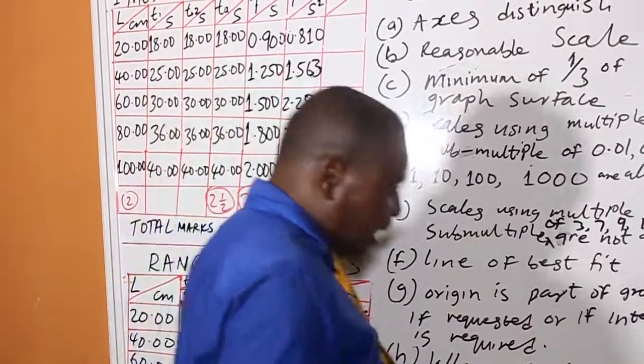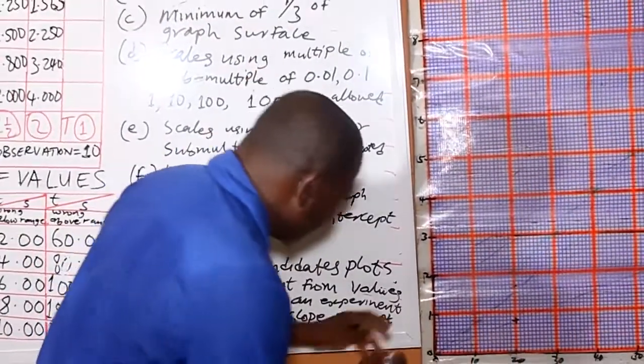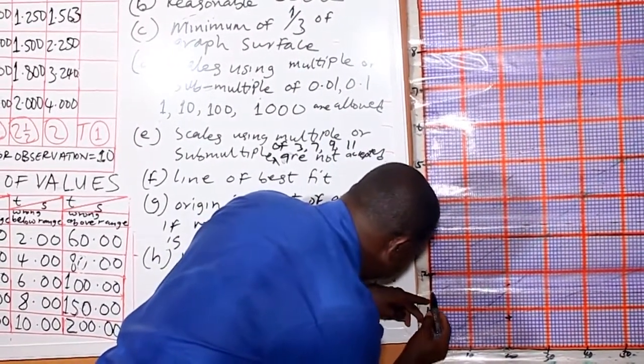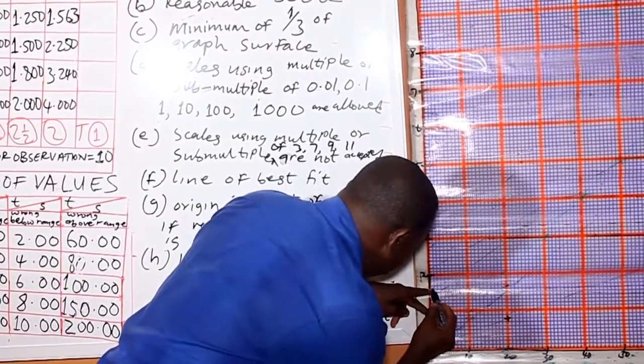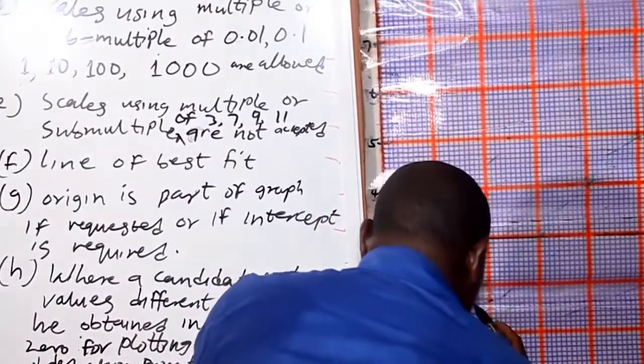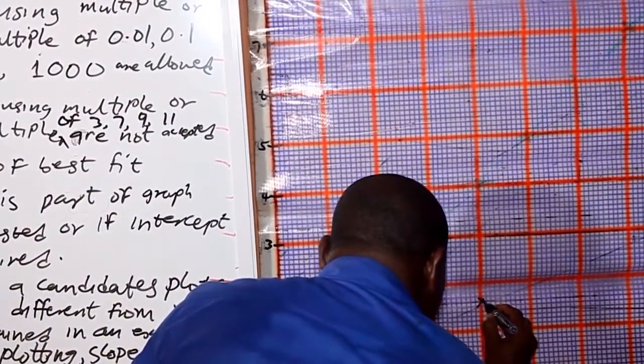The next one is 0.56 against 40. This is 1. So 1.1, 2.3, 1.4, 1.5. It will be between the fifth and sixth line. So you trace it to 40. It will be here.